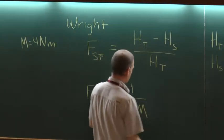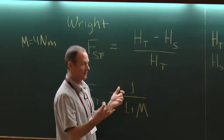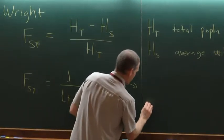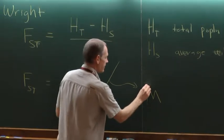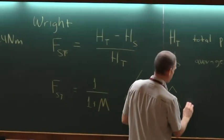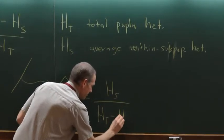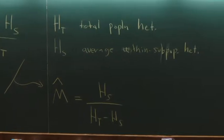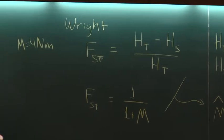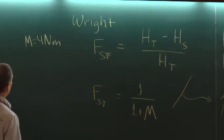This is like an approximate expectation for FST under the island model with a large number of subpopulations. One can make these two things equivalent and solve for M in terms of HS and HT, and get a formula for estimating 4NM from data, where I would have calculated these things according to the allele frequency formulas that Bruce had put up earlier in the week.